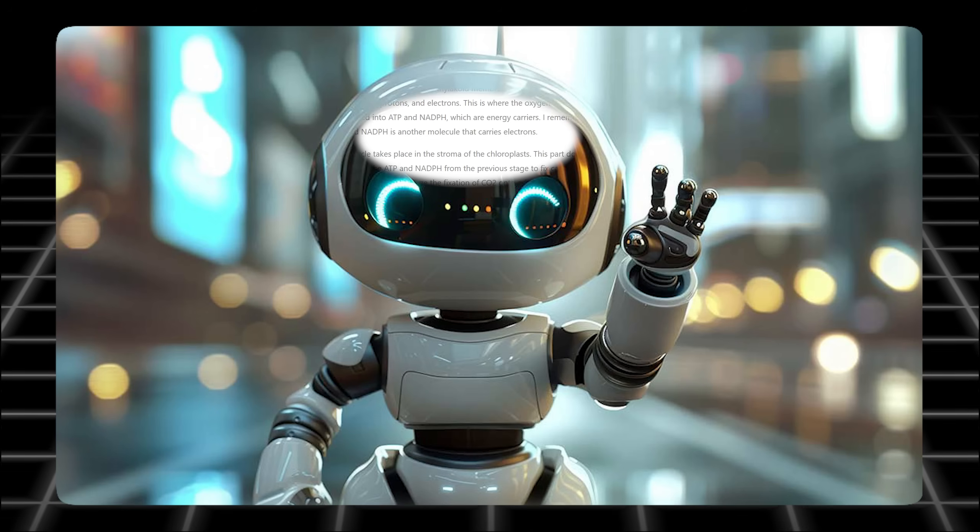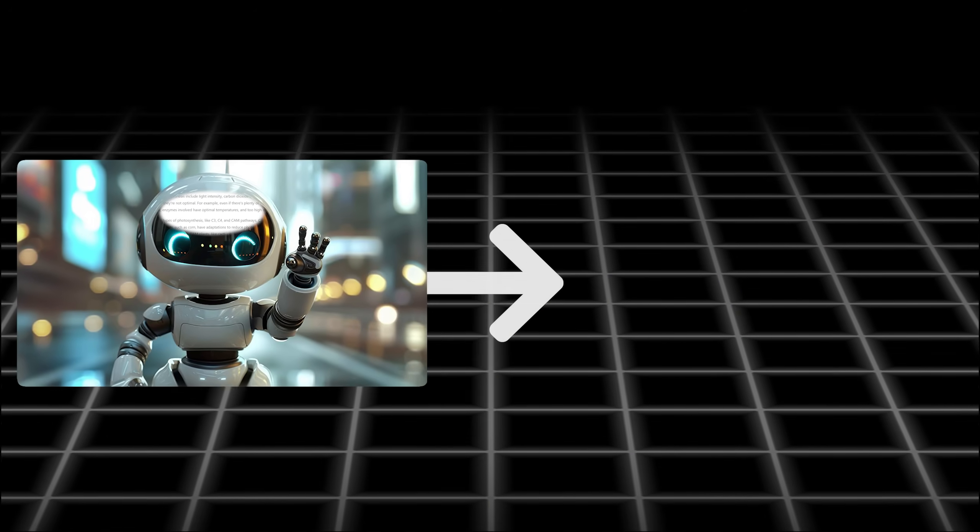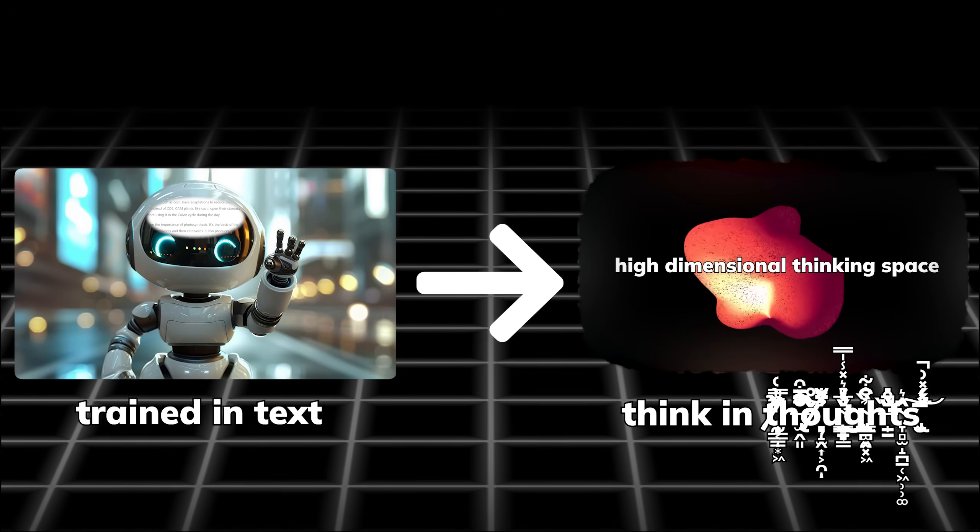While those designs worked really well, it still doesn't really make sense when a model is primarily trained in words in its most critical learning stage, then suddenly pivot to thinking in abstract ways at the end, right?